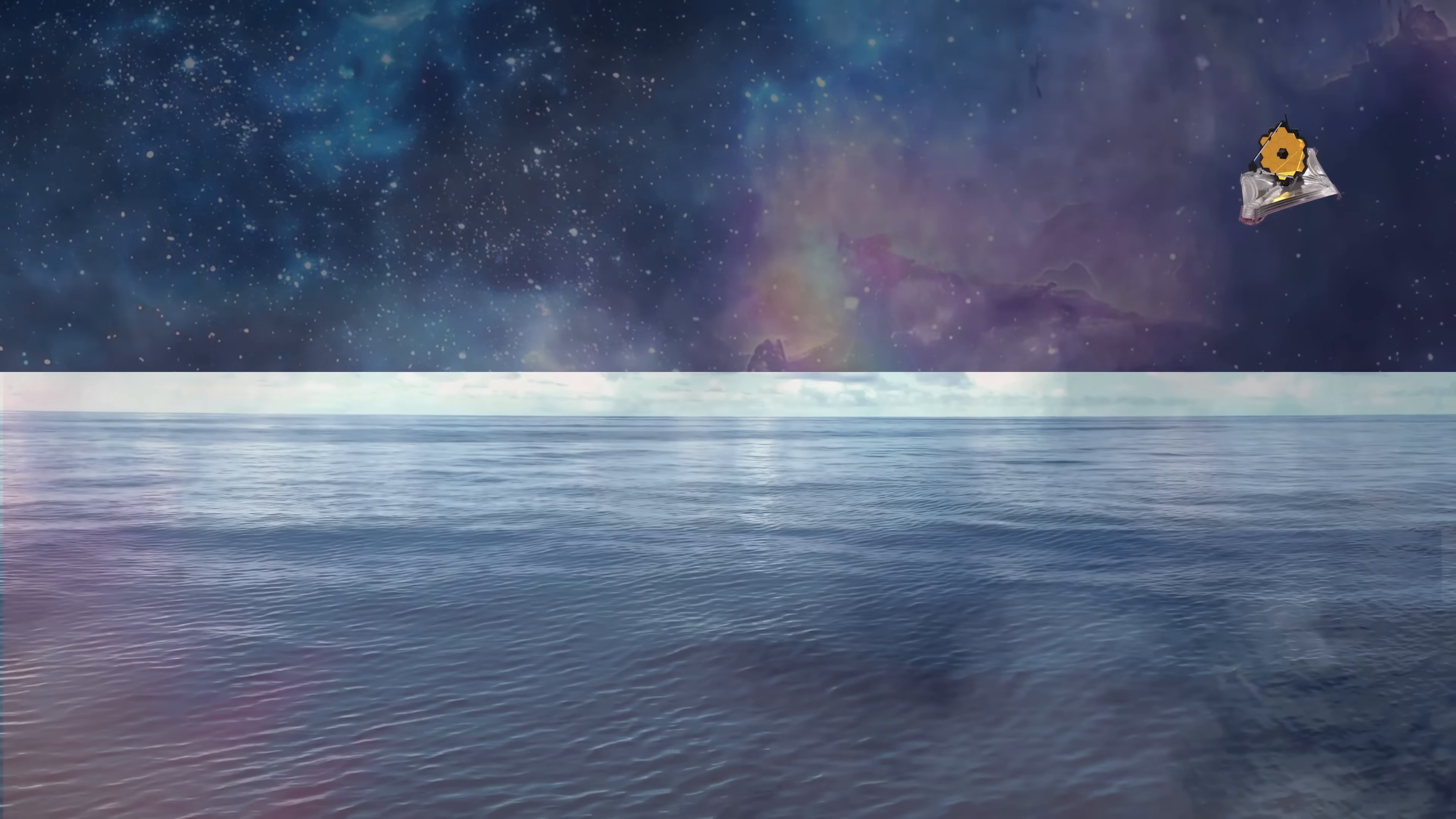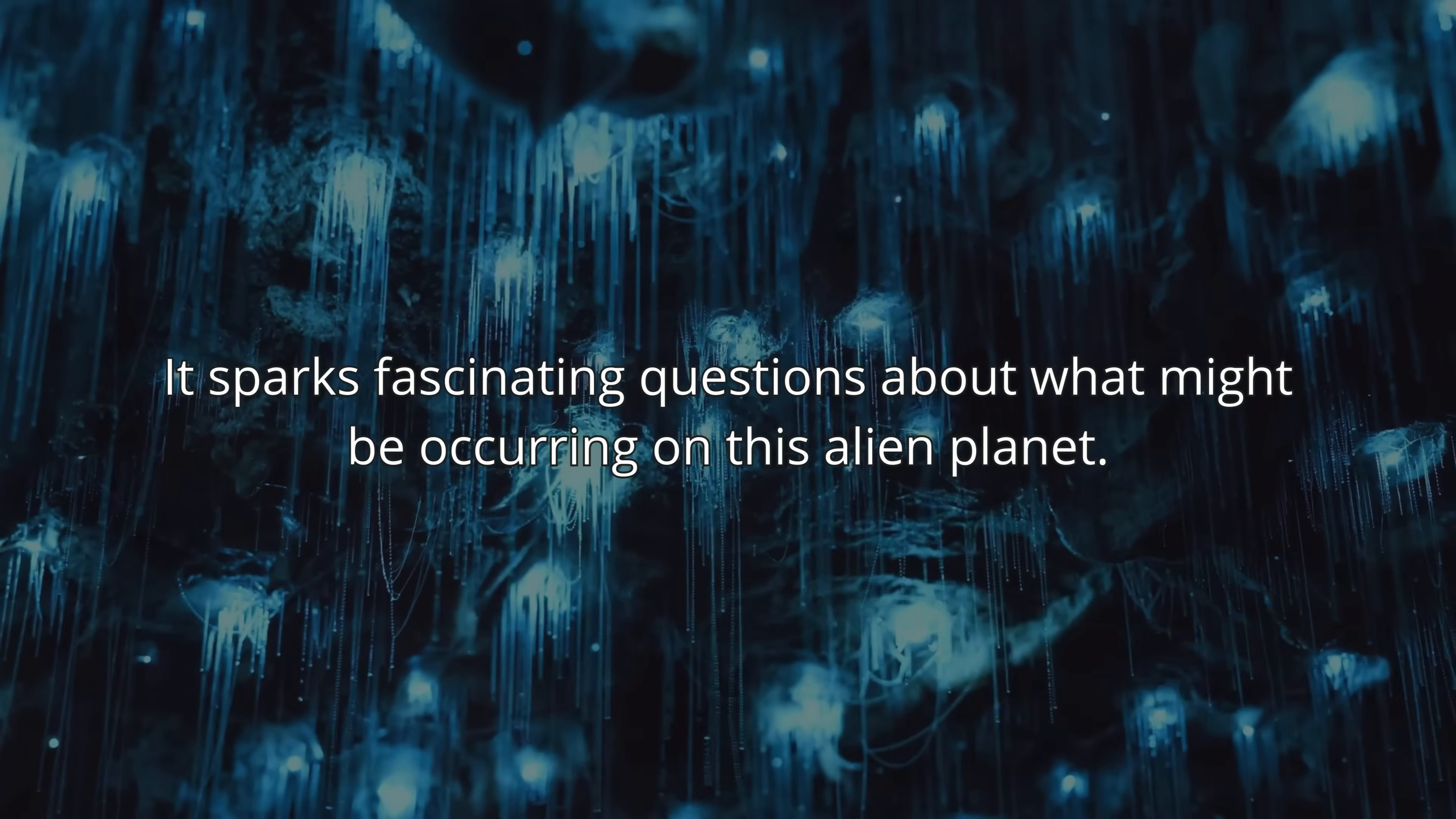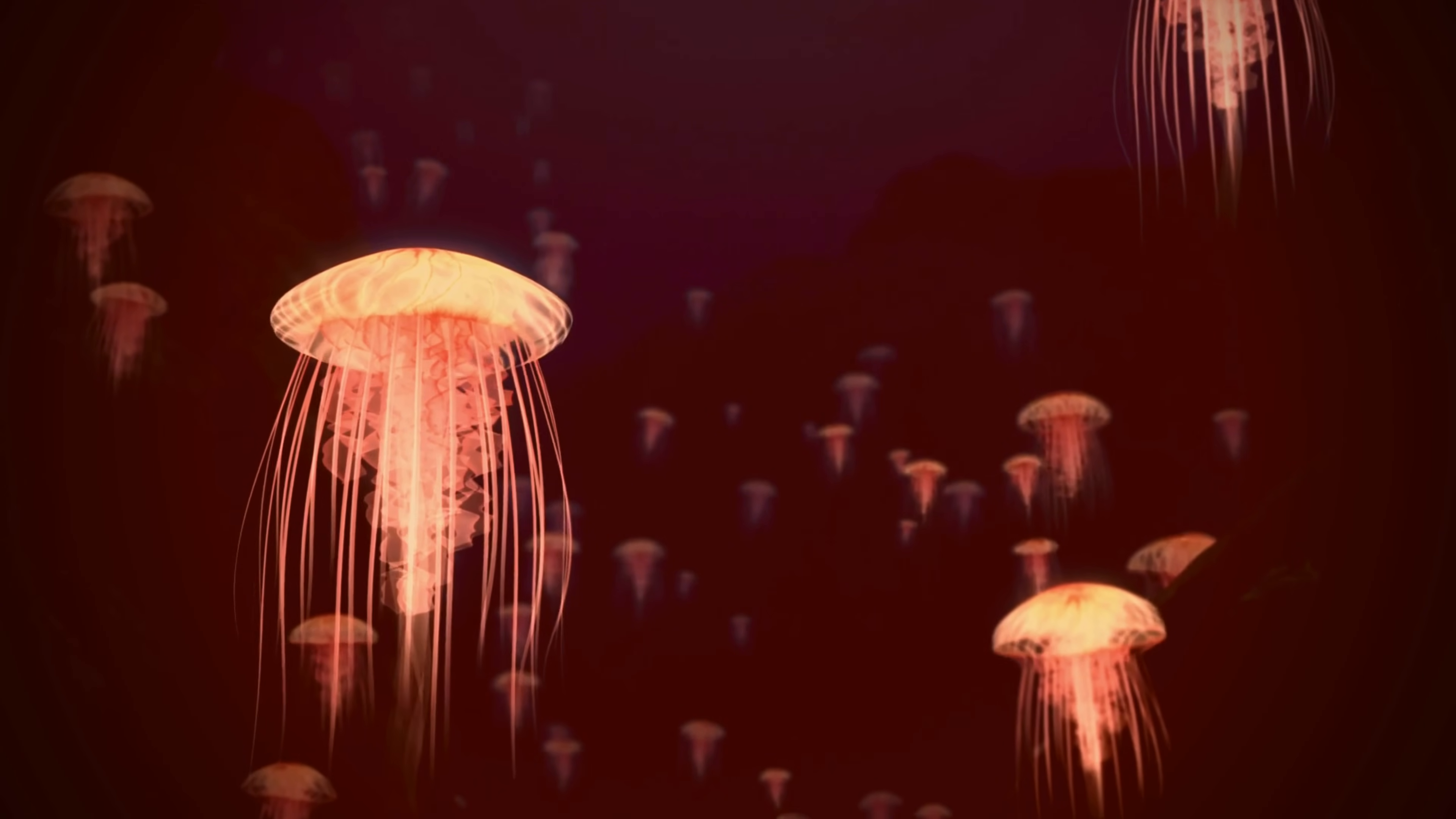Their presence in K-218b's atmosphere suggests that there might be some other chemical processes or even signs of life taking place on this distant planet. It sparks fascinating questions about what might be occurring on this alien planet. This data also suggests that K-218b might have a deep ocean beneath its thick hydrogen-helium atmosphere. Scientists have started calling it a Hycean world, a new type of exoplanet that might support life in very different conditions from Earth.